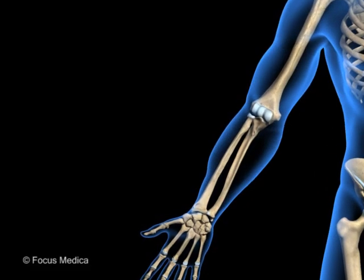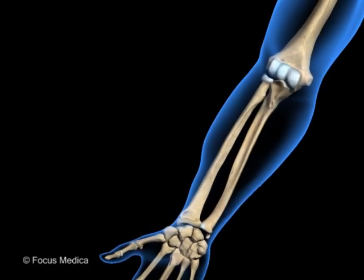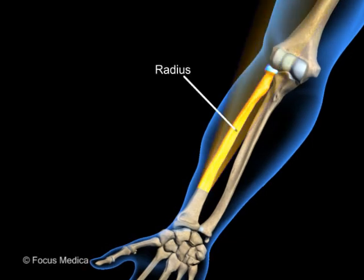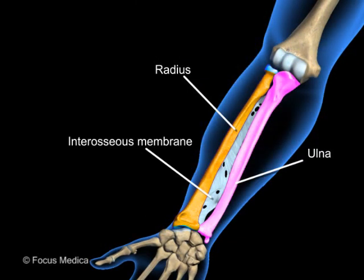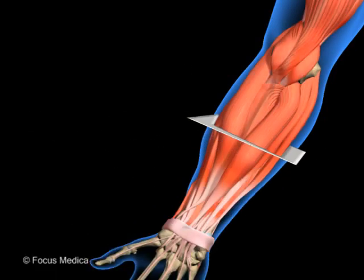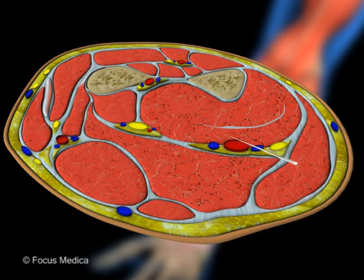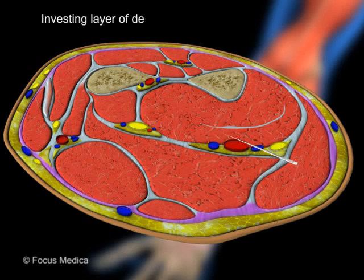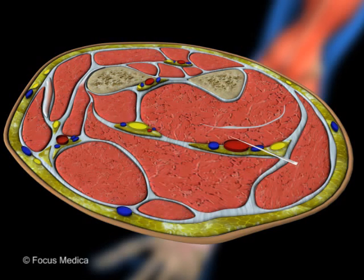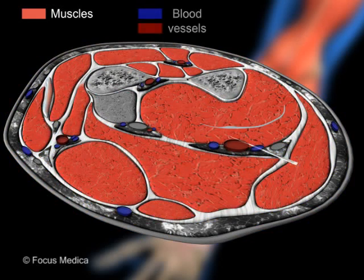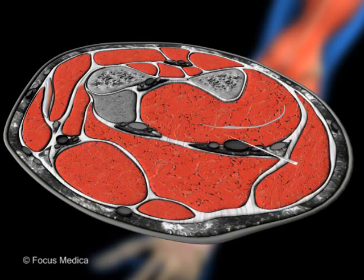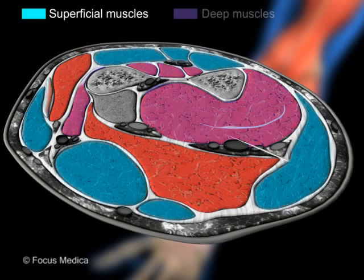The front of the forearm covers the region in front of the radius, ulna, and intervening interosseous membrane. It is a closed osteofascial compartment enveloped by the investing layer of deep fascia. It contains muscles, vessels, and nerves, arranged in two layers — superficial and deep.